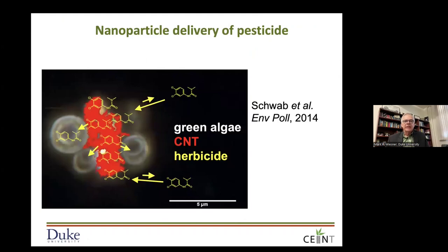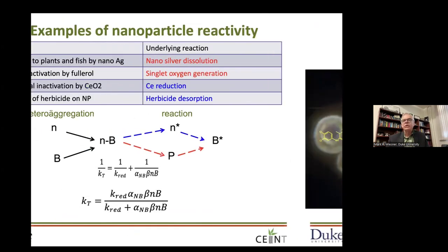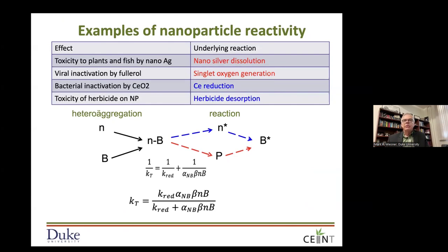We tested this framework with the case of loading up carbon nanotubes with an herbicide and putting them in contact with algae. The nanoparticle would transport up to the algae, attach, and then release the pesticide — viewed as an agricultural application for more efficient use of pesticides. You can generalize this concept: toxicity to plants and fish by nano-silver where the reaction is dissolution, viral inactivation by hydroxylated C60 producing singlet oxygen generation, bacterial inactivation by cerium dioxide due to reduction, or herbicide desorption.